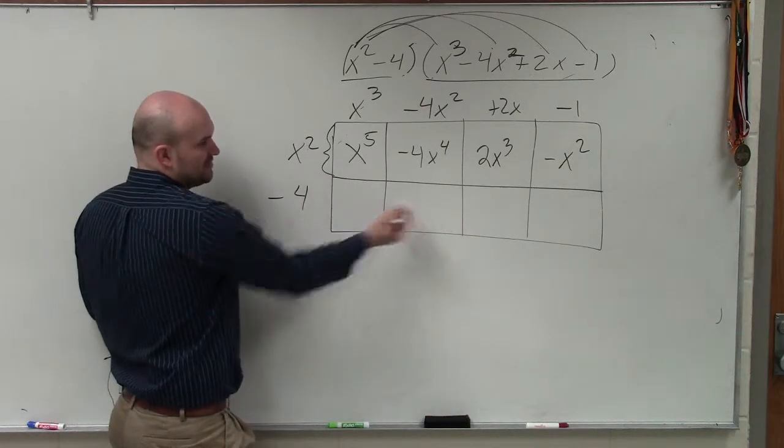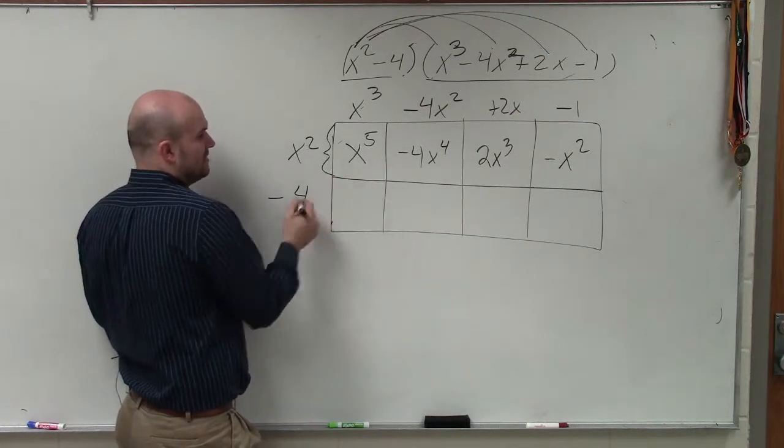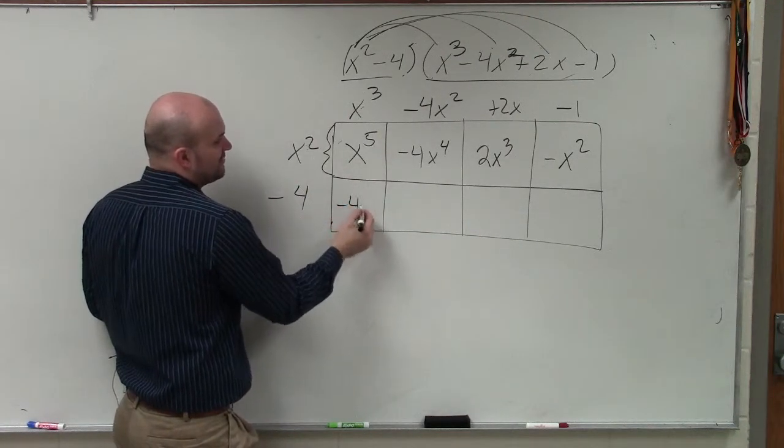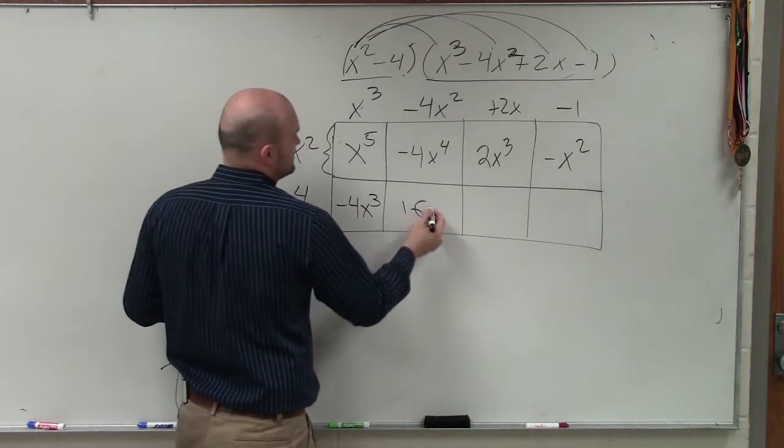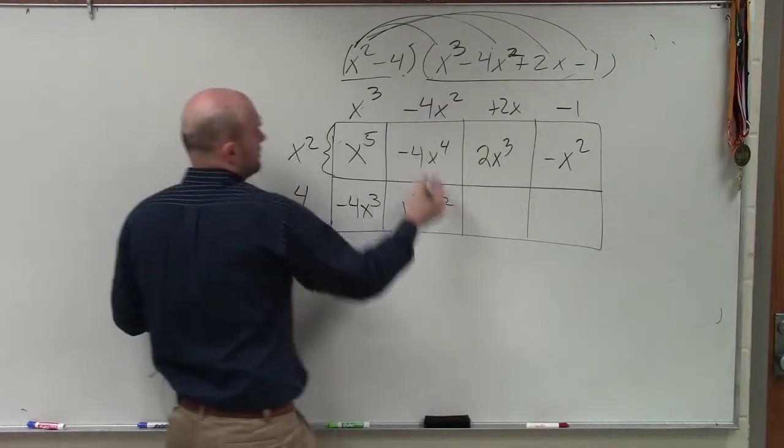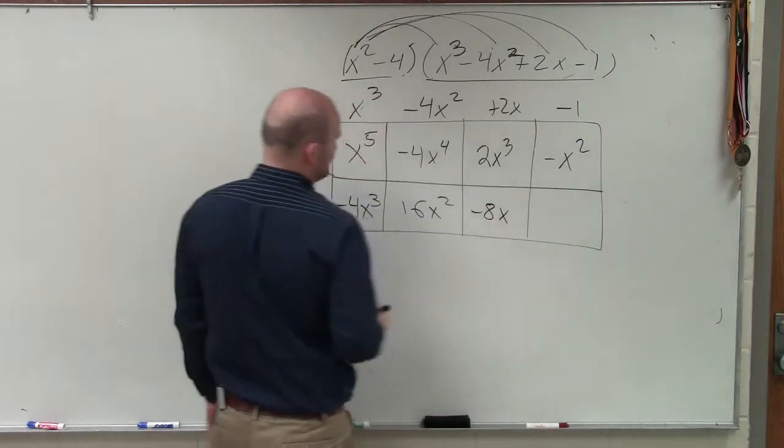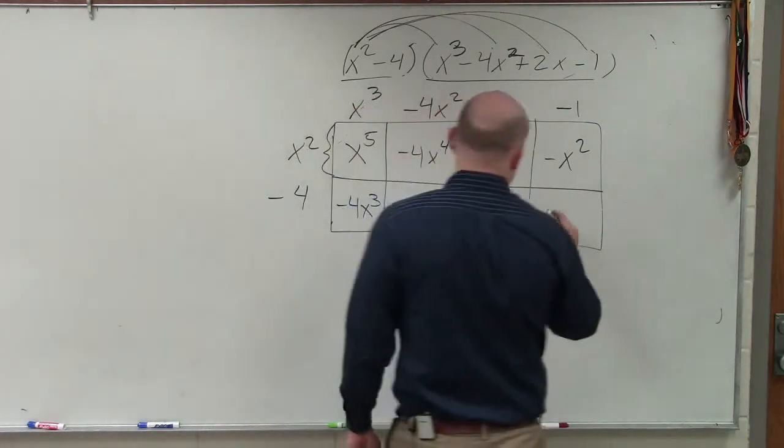Now, let's find the area of each of these boxes. Length times width. Negative 4 times x cubed is negative 4x cubed. This becomes a 16x squared. Negative 8x. And this becomes a positive 4.